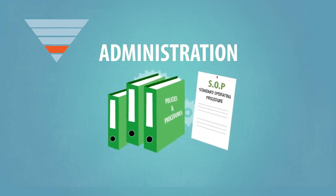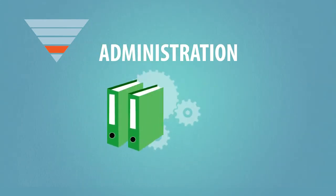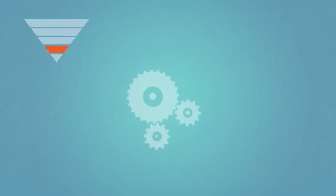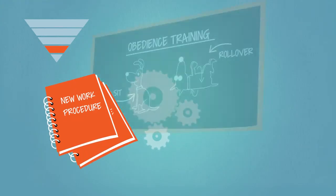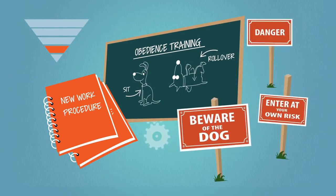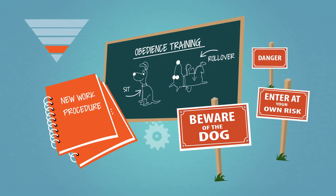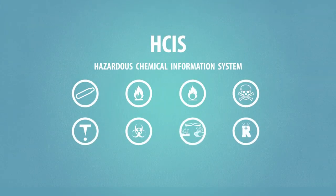Administrative controls are changes to the way people work. Examples include procedure changes, employment training, and installation of signs and warning labels, such as those in the hazardous chemical information system.